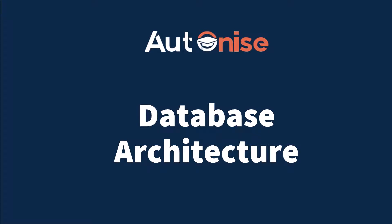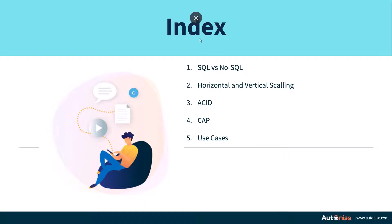Hello everyone. In this session we learn about the database architecture guidelines which you should follow while choosing or planning the architecture of your programs. The index is as follows: first we'll look at SQL versus NoSQL based databases, next at horizontal and vertical scaling, then at the ACID concept, the CAP concept, and use cases — in which use cases which kind of database should be used.